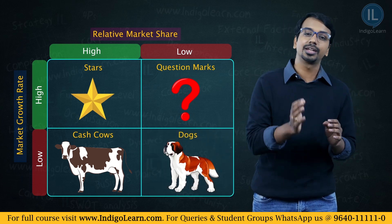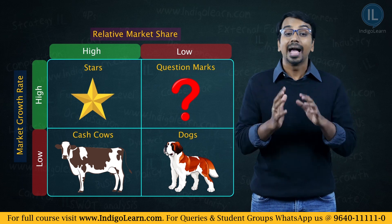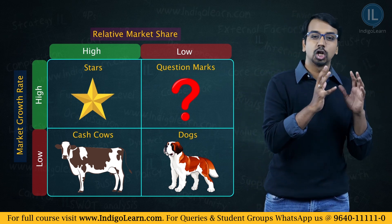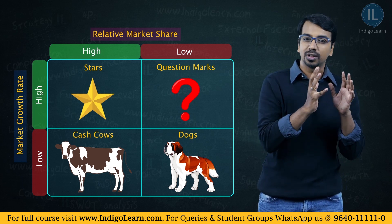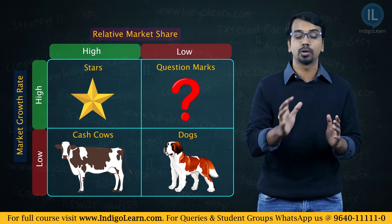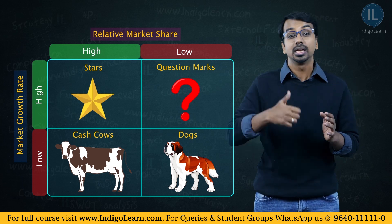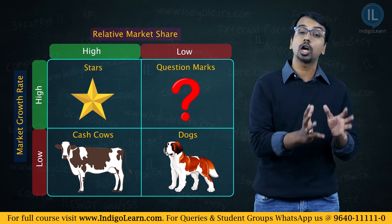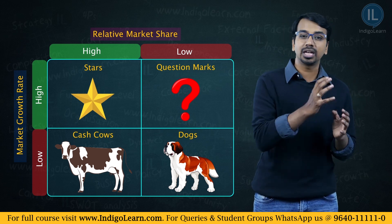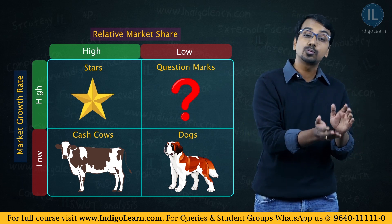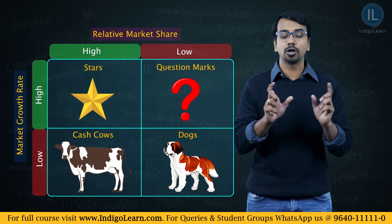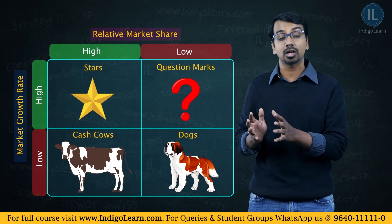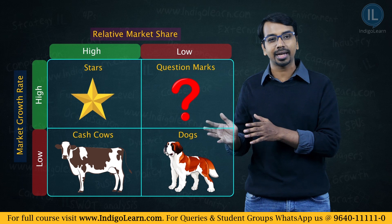If you cannot increase the market share, eventually when the market growth rate also declines, it falls into the category called dog. Dog is a category where both the relative market share and the market growth are low. As we have seen in the product life cycle, after the growth rate subsides and the market matures, eventually it will die down, and similar fate will happen with the dog category. Dogs do not provide anything to the business — they are just idle investments. Unlike cash cows where profits and cash inflows are coming in, dogs require investment to maintain but generate very little cash inflow. The option in this case is to divest or dispose of the product and sell it out.